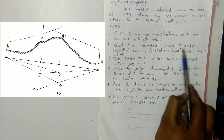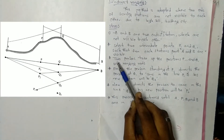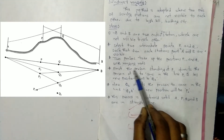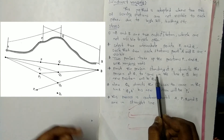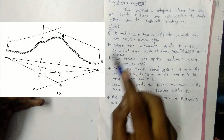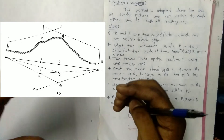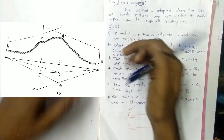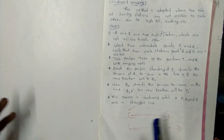Select two intermediate points P1 and Q1 such that from each station, points A and B are visible. Two persons take up positions P1 and Q1 with ranging rods. The person standing at P1 directs the person at Q1 to come in the line P1-B; his new position will be Q2. Then Q2 directs the person to come in the line Q2-A; his new position will be P2. This process is continued until A, P, Q, and B are in the same straight line.